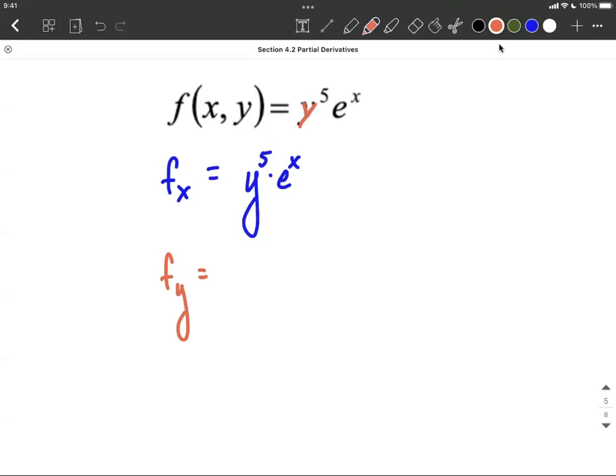Alright, so power rule says five can come down, reduce the exponent by one, but it's still going to be multiplied by what we're treating as a constant, the e to the x.